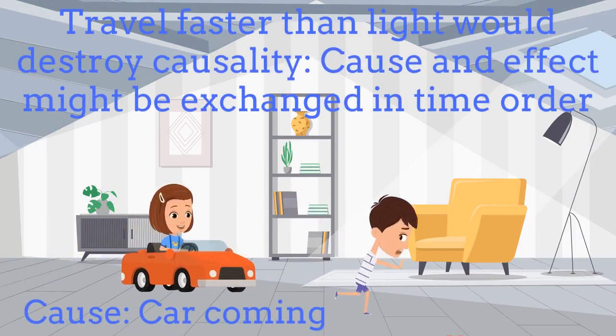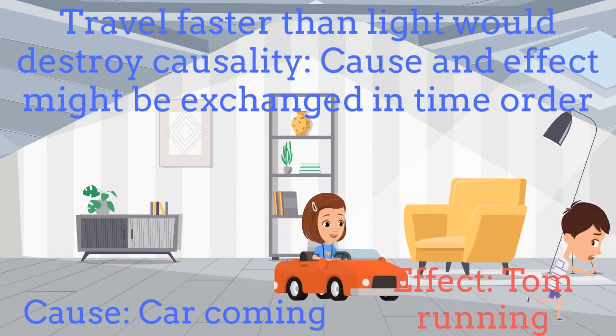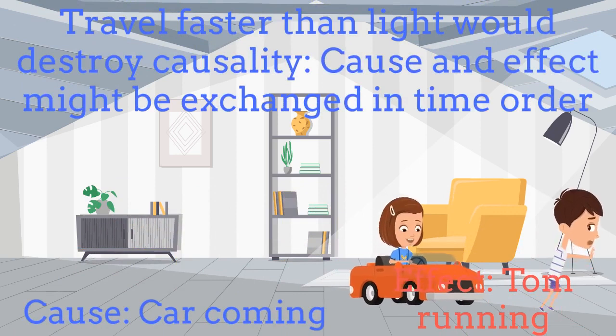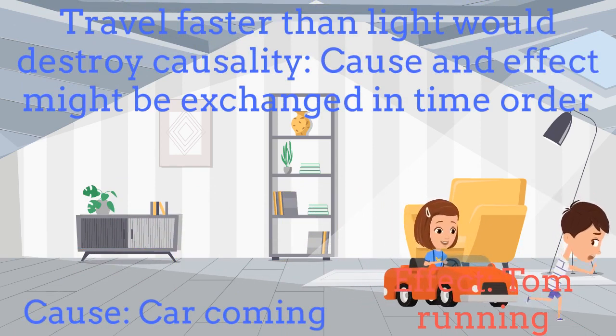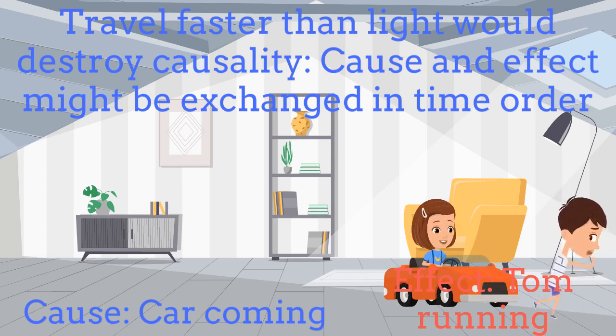In a previous episode we explained that if we could travel faster than the speed of light, then the causal order of the universe would be destroyed. This means that in such a case there wouldn't be a real distinction between cause and effect. Then in this example, Tom is running away very scared because Jessica wants to collide him with her toy, which is just a small car. We can take this example Tom running as the effect and Jessica coming with her car as the cause.